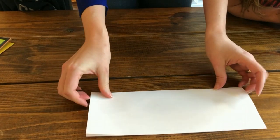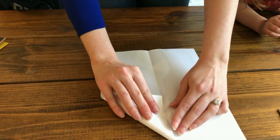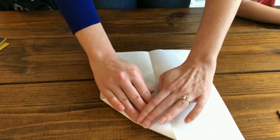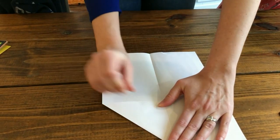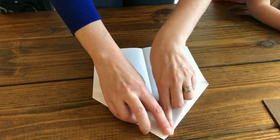Use your fingernail or something to make that really crisp. Then we unfold it and we're going to fold the triangles down, and again nice crisp lines. So we fold the edges down, we're kind of making the shape of the nose of the plane.